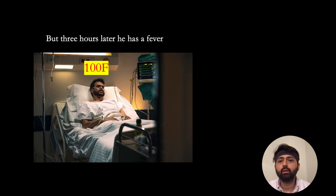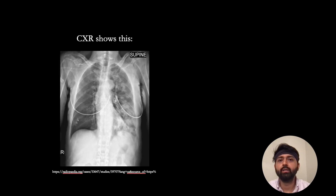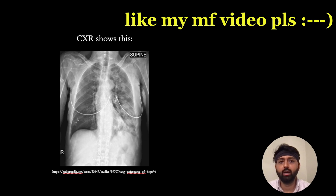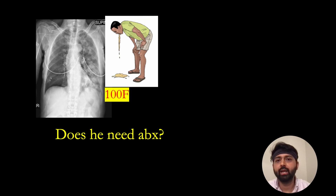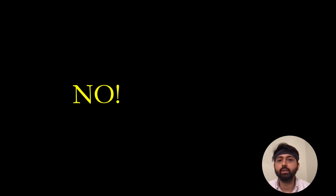You're thinking: what is going on, this doesn't make sense. You get an x-ray but it does not show a lobar infiltrate — it instead just shows junk everywhere. His entire left lung has infiltrates. Does this person need antibiotics?